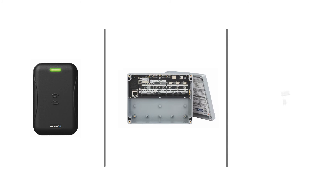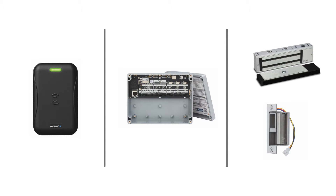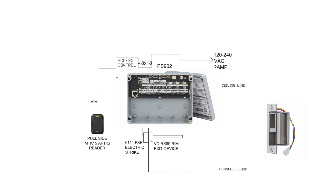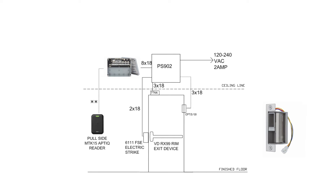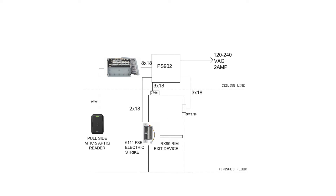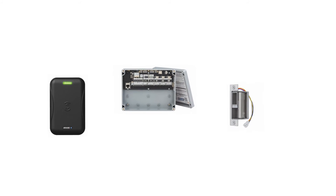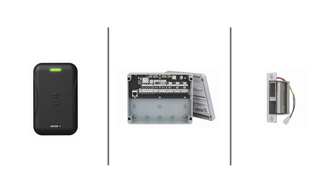Every access control system has these three parts. Many systems have more parts than this, but now you should be able to look at any system and identify the reading part, the controlling part, and the locking part. Now that you know the three basic parts and their jobs, you're also ready to know that these parts are not always separate devices, and the boundaries of their jobs sometimes get a little blurry.